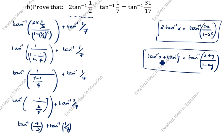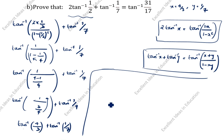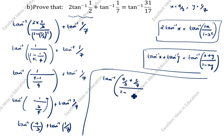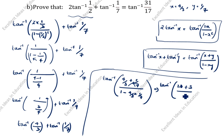You see here — tan inverse of x plus tan inverse of y. What is x? x is equal to 4 by 3, y is equal to 1 by 7. Now we write this using the formula: tan inverse of x plus y by 1 minus xy. So tan inverse of x is 4 by 3, y is 1 by 7, divided by 1 minus x times y which is 4 by 3 times 1 by 7. Cross multiplying: tan inverse of 7 times 4 is 28 plus 3, divided by 21.